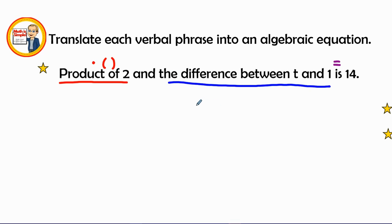So we can start setting up our equation. We know that the equal sign is right here, and it's going to be 14. Now we look at the difference between two numbers. When we look at difference, we're looking at subtraction. So the difference, we're going to subtract T and one. So here we go, subtract T and one.